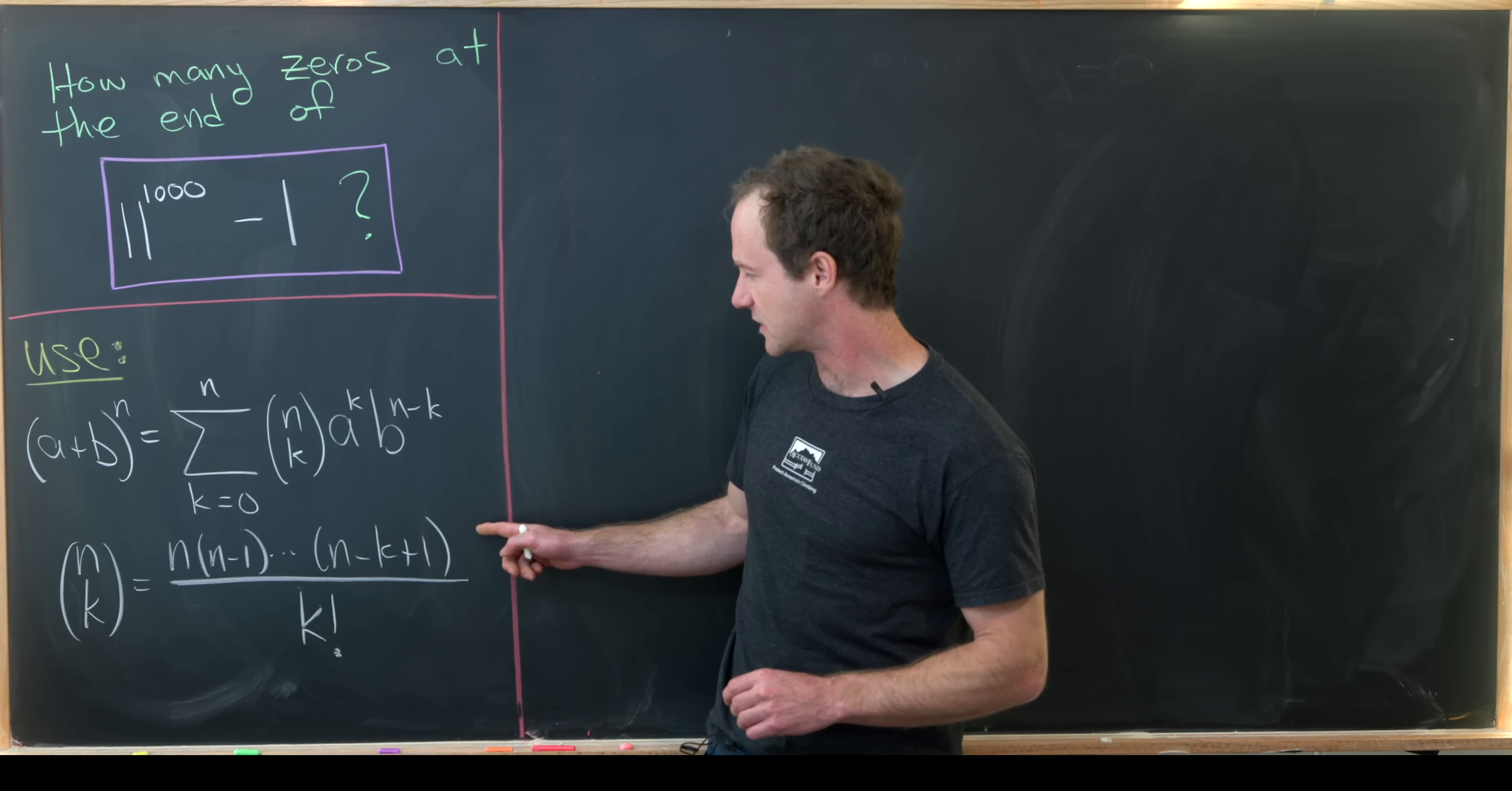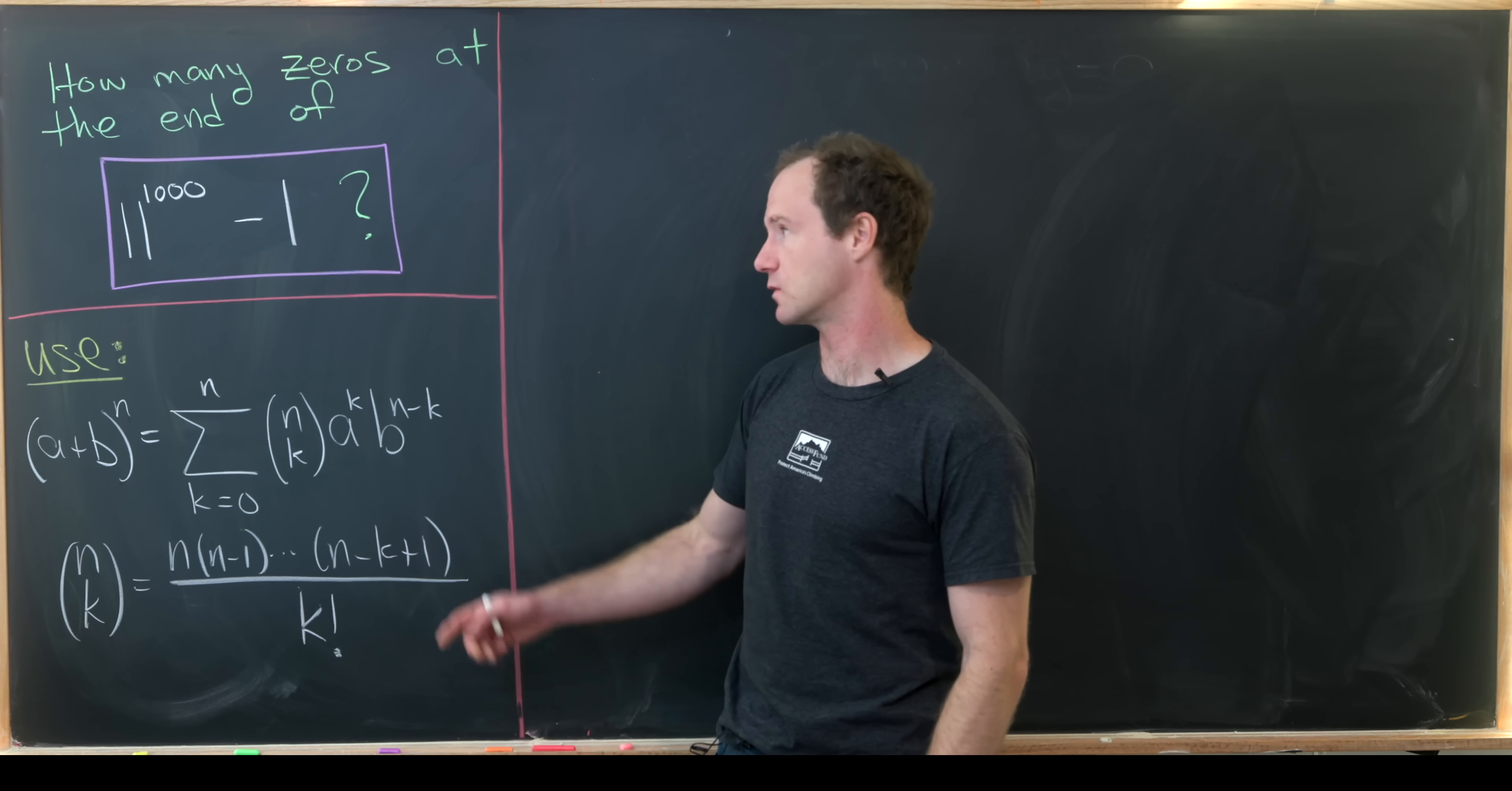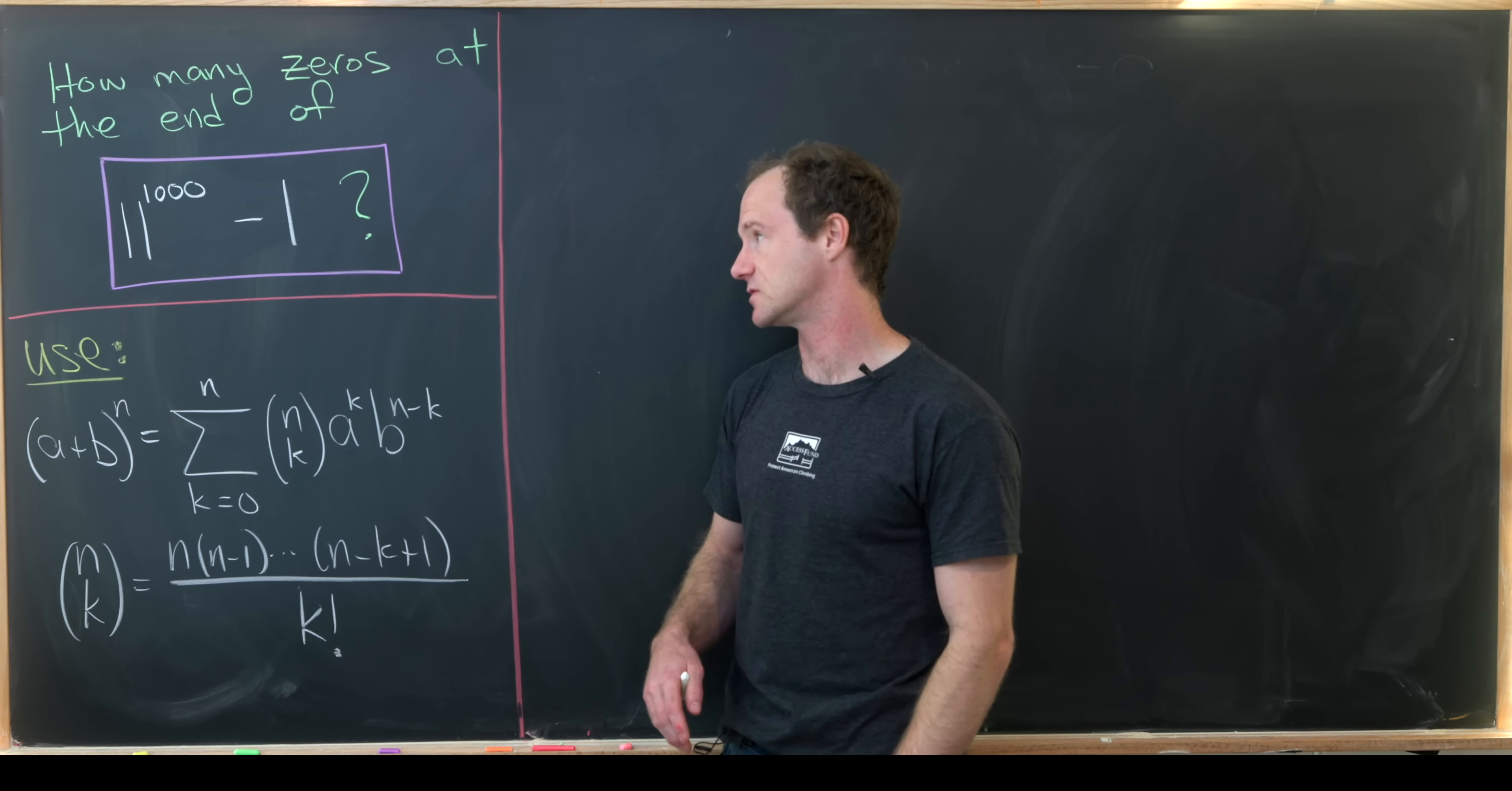Now the important thing here is that there are k total terms in the numerator and there's another way of writing this if n is a natural number, which it will be in our case, and that would be n factorial over k factorial times n minus k factorial. But this is a somewhat more general way to write it where n does not have to be a natural number.